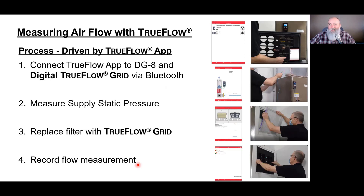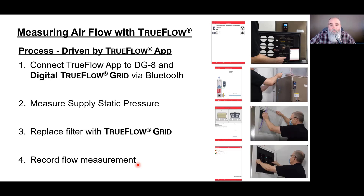You might be wondering how it knows. It's math. What we're able to do is compensate for the difference in the pressure drop across the filter and the TrueFlow grid and apply some math to that. What we're doing is measuring all the air that's moving through the system — all the air that would be moving through the filter is now moving through the TrueFlow. The result gives us an accurate measurement of airflow.